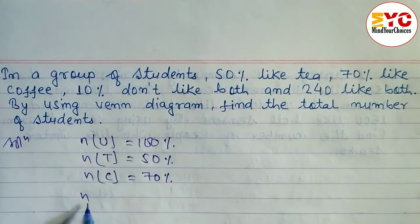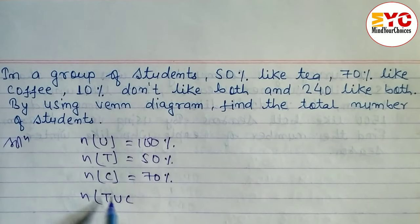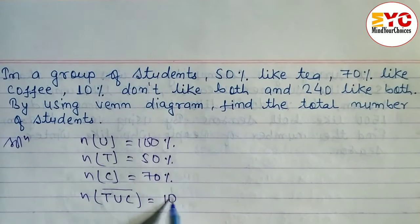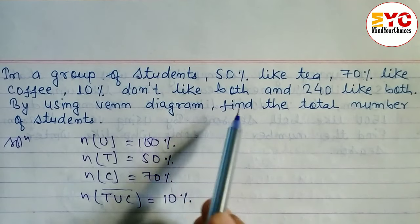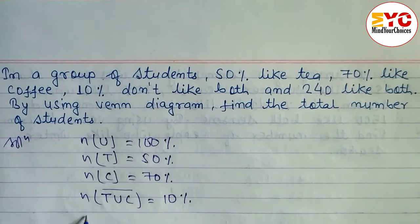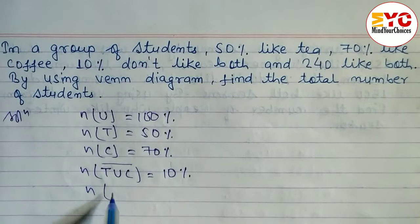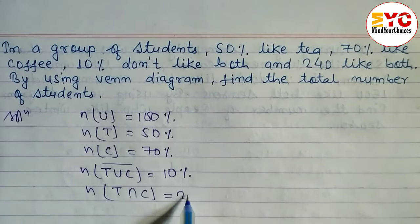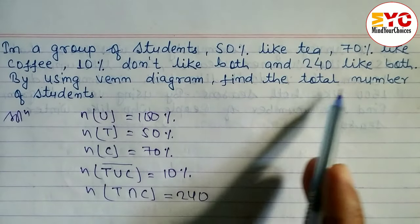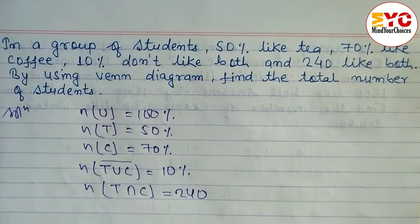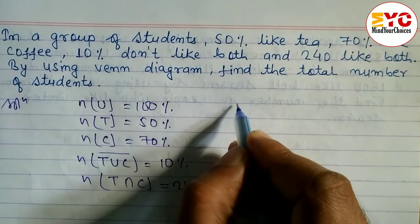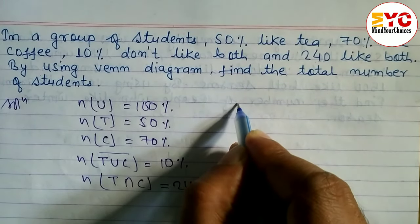Did not like both means union complement — we can write (T union C) complement is equal to 10%. And 240 like both, so number of persons who like both, which means intersection, is equal to 240. By using a Venn diagram, we have to find out the total number of students.